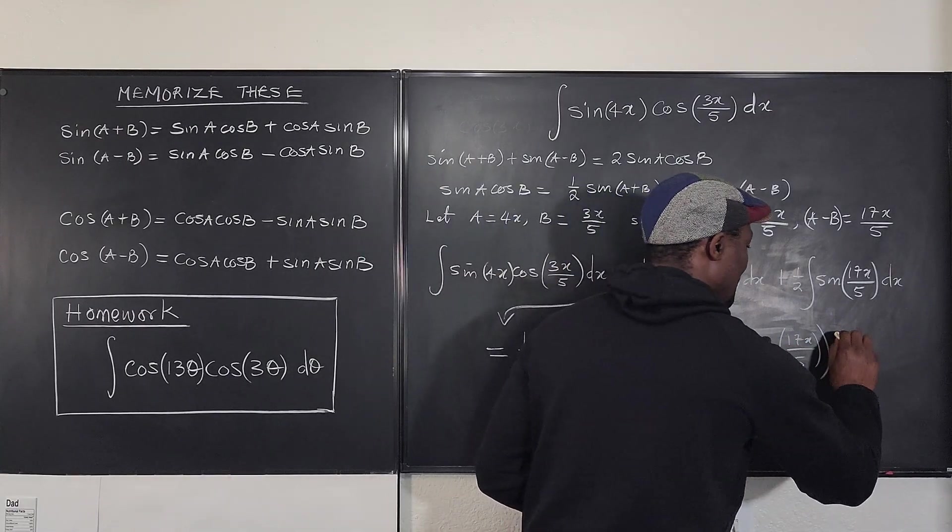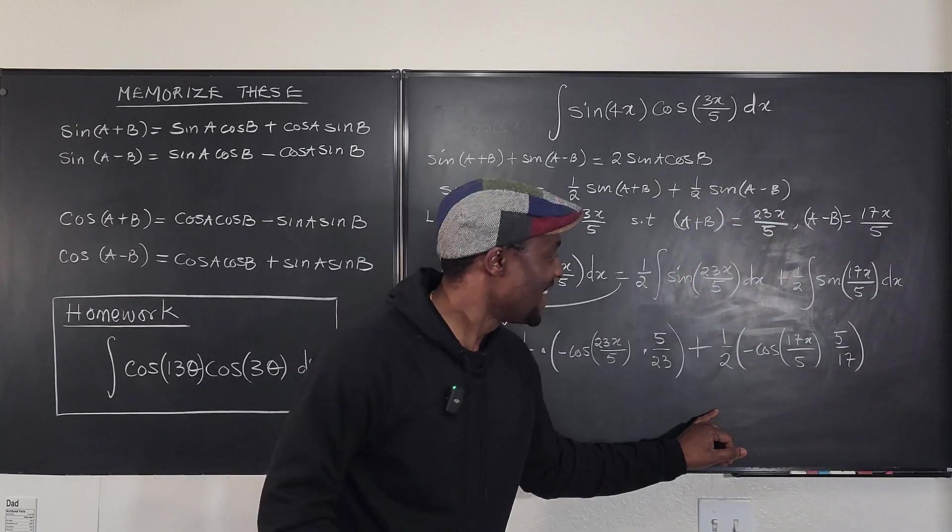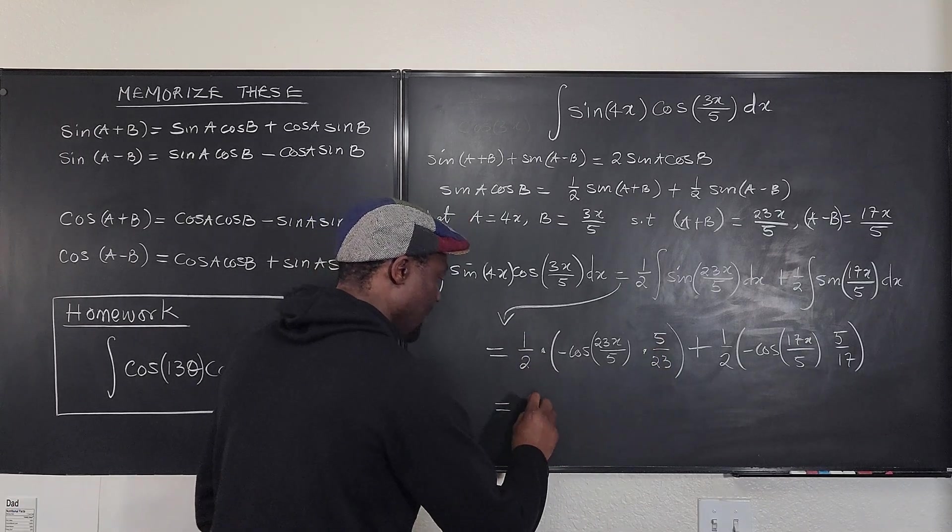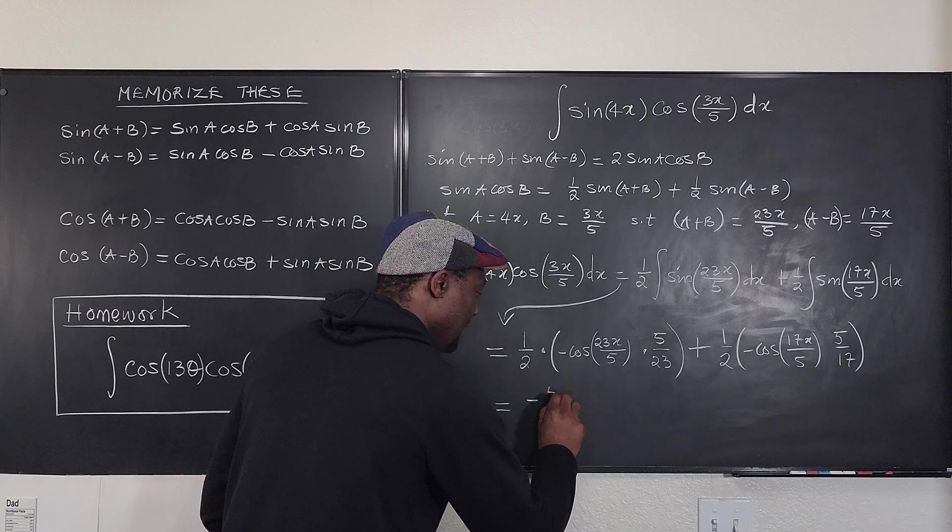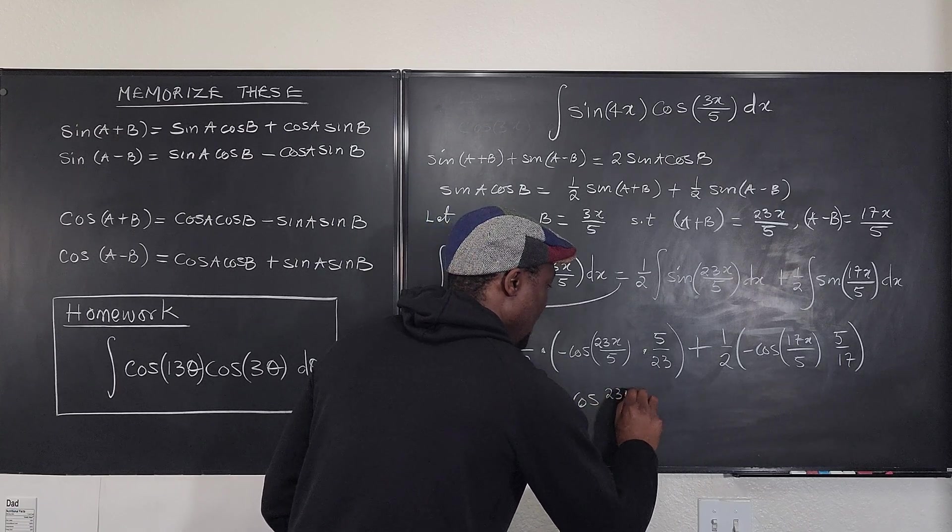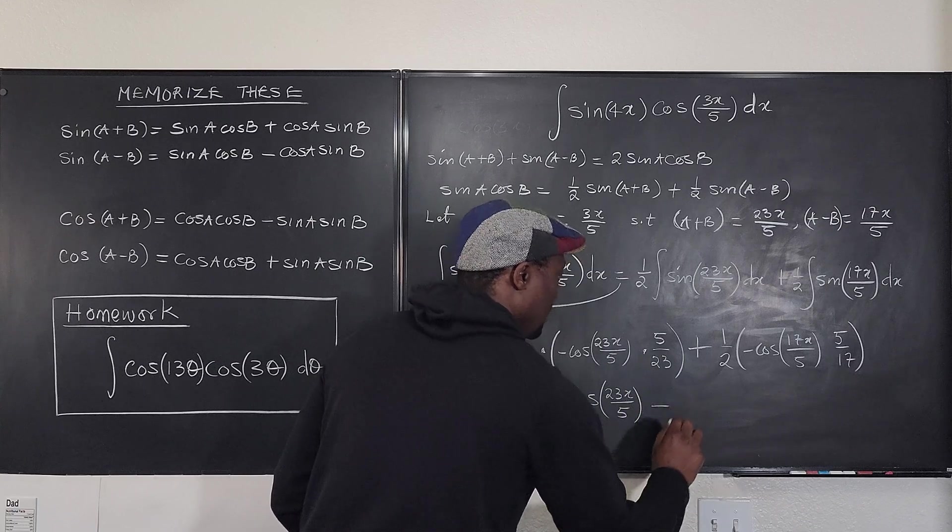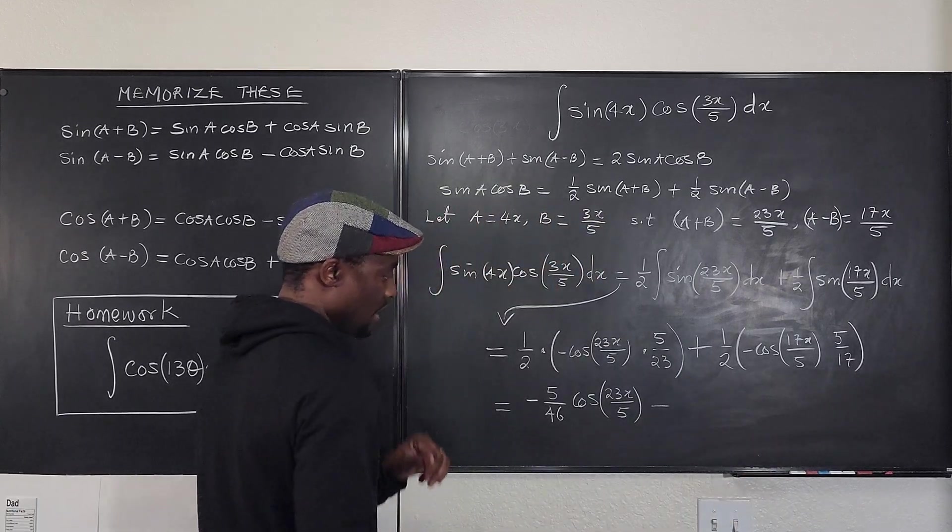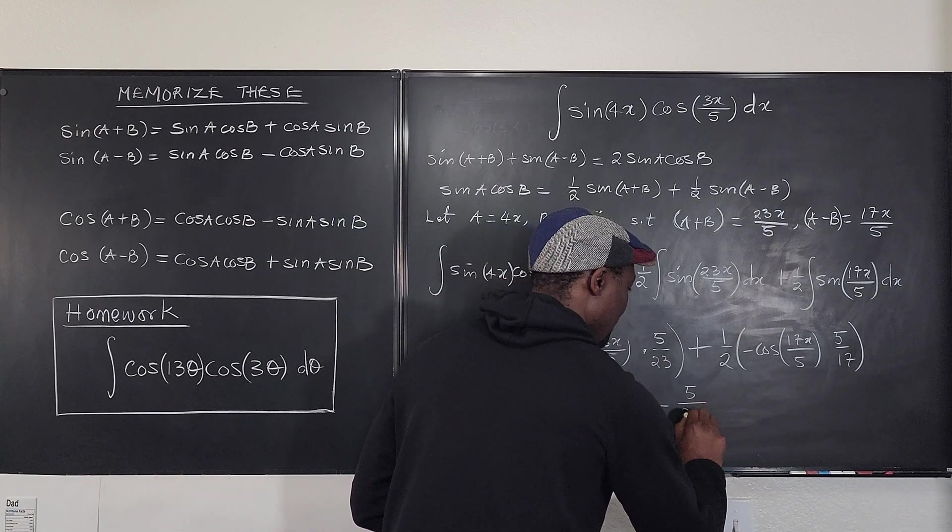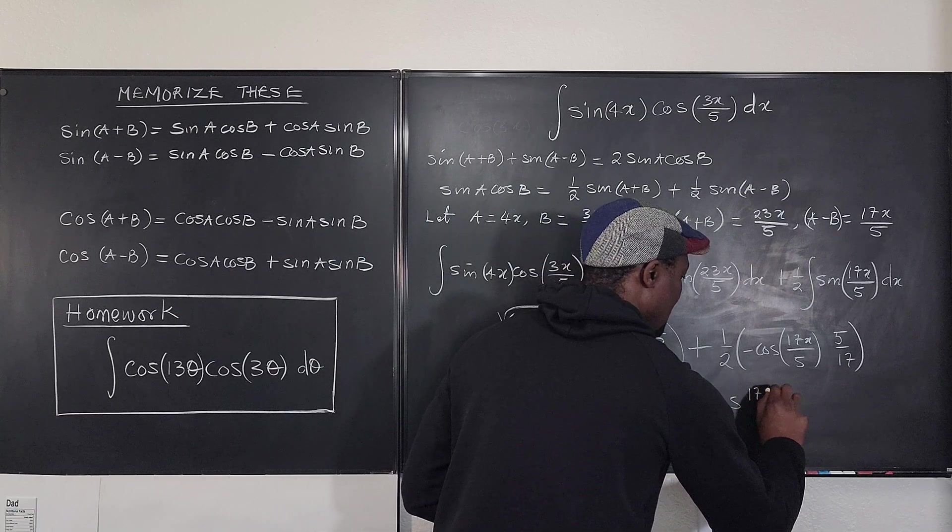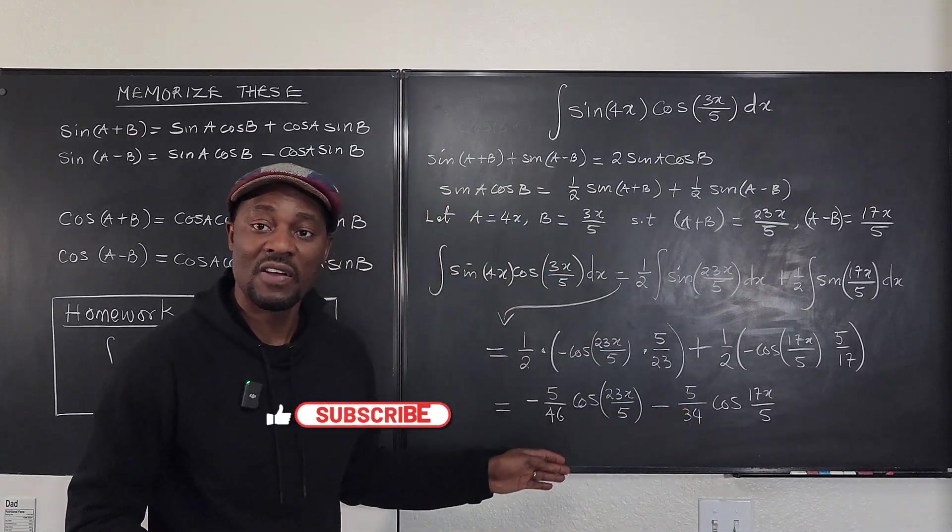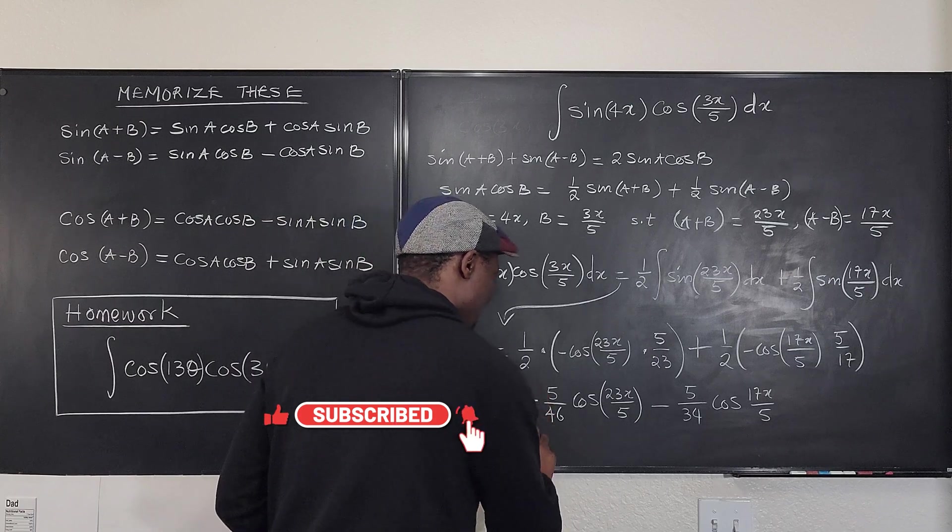Now let's clean up. Final answer: this answer is going to be this multiplied by this, which is 5/46. Negative, so it's negative 5/46 cosine of 23x/5 minus what do we have here? We've got negative 5/34 cosine of 17x/5. And this is our answer. If you want to factor out negative 5, that's okay, but I'm not doing that. Plus C.